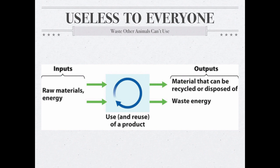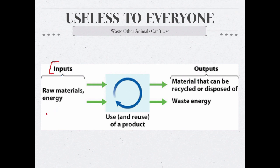Let's talk a little bit about this idea of waste in general. As we've talked about all year long, every system has inputs and outputs. When we're talking about the waste stream, your input is raw material and energy. These raw materials and energy go into the system, are used in the system, and cycle in the system. Once they become useless they are output from the system. The outputs are going to be waste energy — heat, noise, and all those wasted energies — and then materials that can be recycled or disposed of.